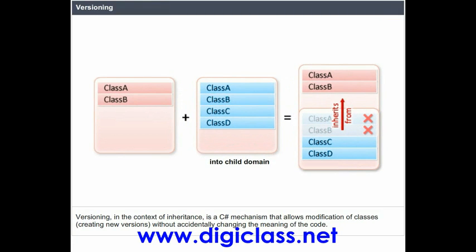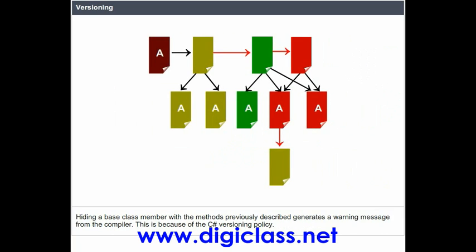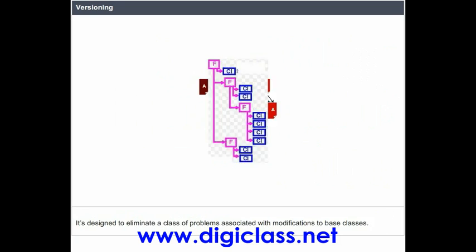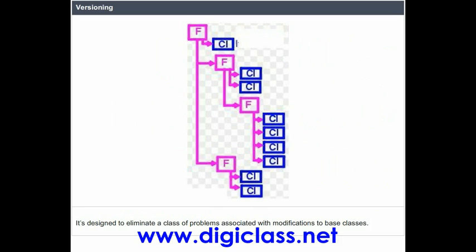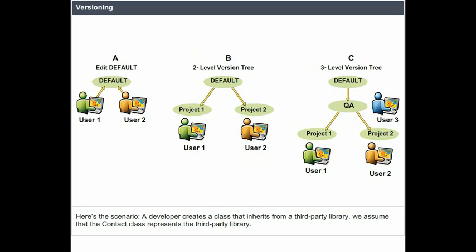Versioning, in the context of inheritance, is a C# mechanism that allows modification of classes, creating new versions without accidentally changing the meaning of the code. Hiding a base class member with the methods previously described generates a warning message from the compiler, because of the C# versioning policy. It's designed to eliminate a class of problems associated with modifications to base classes. Here's the scenario: a developer creates a class that inherits from a third-party library. We assume that the Contact class represents the third-party library.